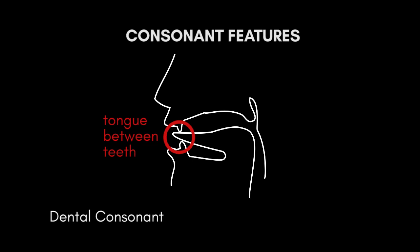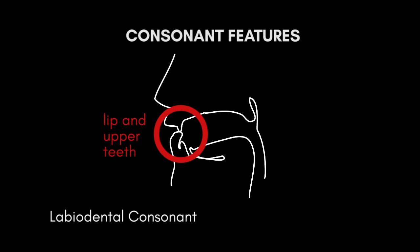Dental consonants occur when you block or constrict air flow by placing your tongue against your upper teeth. The examples of dental consonants are th as in the word 'thick' and th as in the word 'rather.' Labiodental consonants occur when you block or constrict air flow by curling your lower lip back and raising it to touch your upper row of teeth.